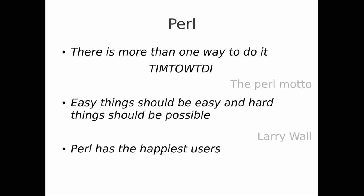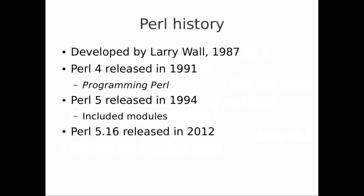A little bit of Perl history. It was developed in 1987 by Larry Wall, and Larry Wall has a background in languages — languages as in spoken and written languages, rather than programming languages — and so developed Perl with that notion of how people use languages to interact.